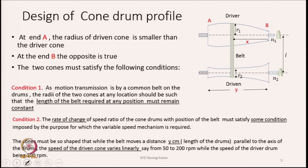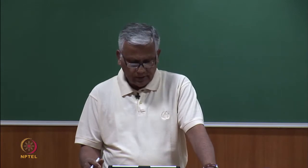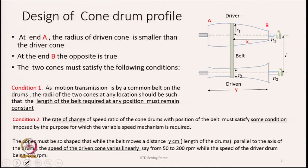Now we should learn about the cone drum profile. We have a top driver drum and a bottom driven drum. At end A, the radius of the driven cone is smaller than the driver cone, while at end B it is the opposite — the driver drum diameter is much less in comparison to the driven drum.